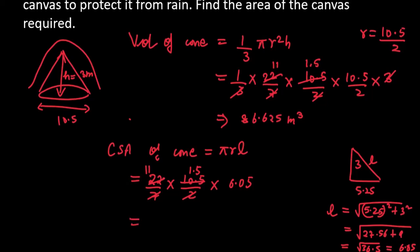Now multiply them. Multiply 11 with 1.5 and 6.05. So your final answer will be 99.825 m².